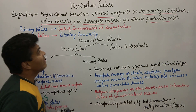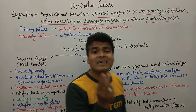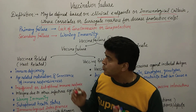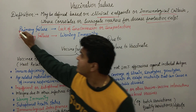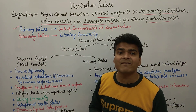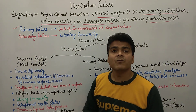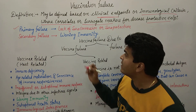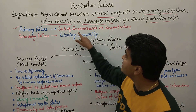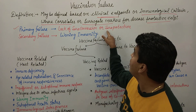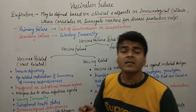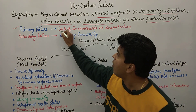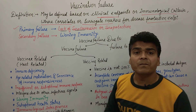Now, what are the reasons behind vaccination failure? Scientists give two kinds of failure: the first one is primary failure and the second one is secondary failure. What is primary failure? Primary failure is lack of seroconversion or zero protection — meaning the person under consideration has a lack of seroconversion.